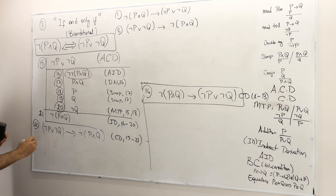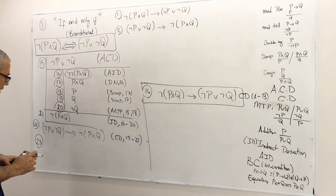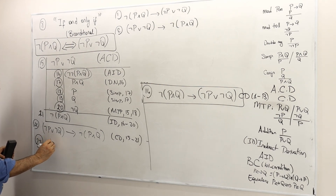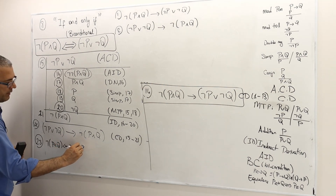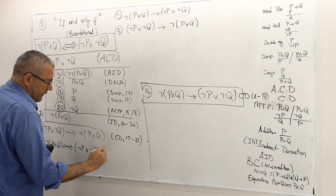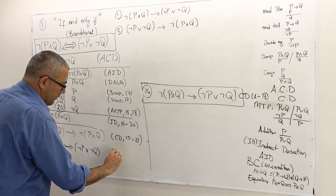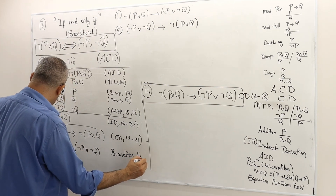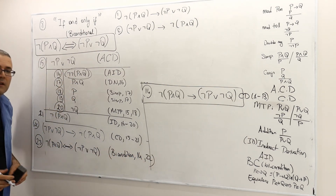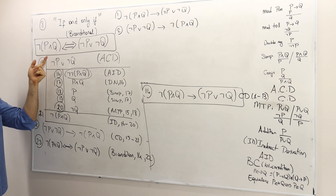I close this box. Line 22: not P or not Q implies not P and Q — by indirect derivation over lines 16 through 20, and conditional derivation over lines 15 through 21. Finally, line 23: combining lines 14 and 22 by the biconditional rule, I conclude not P and Q if and only if not P or not Q. The theorem is proven.